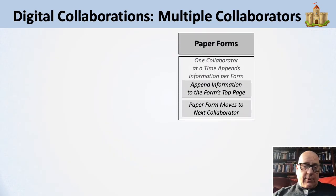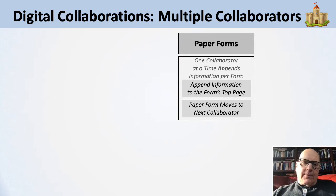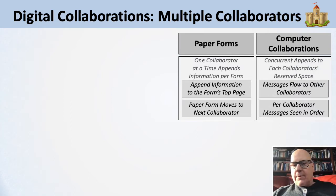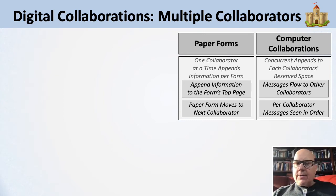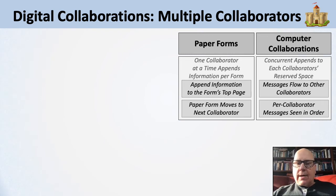The world is different with computers. Paper forms had one collaborator at a time because you needed the piece of paper to write on. Computer collaborations can be more flexible — you can do concurrent appending to each collaborator's reserved space. Each collaborator has their dedicated place to write, not where the other collaborators write. As they independently add things, those messages can flow to other collaborators.